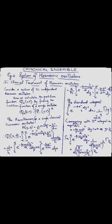Let us begin with the classical treatment of harmonic oscillators, where we consider a system of N independent harmonic oscillators. According to the canonical ensemble formulation, we calculate the partition function of the system of N independent harmonic oscillators, and from that determine the complete thermodynamics. The partition function Q(N,V,T) is equal to Q1(V,T) raised to the power N, where Q1(V,T) is the partition function of the single oscillator.